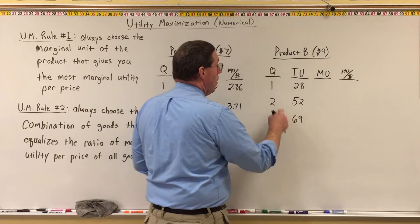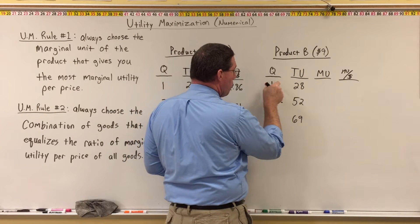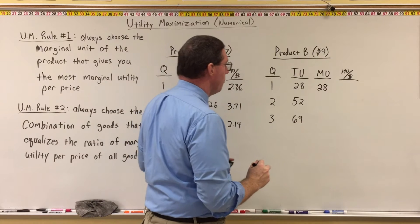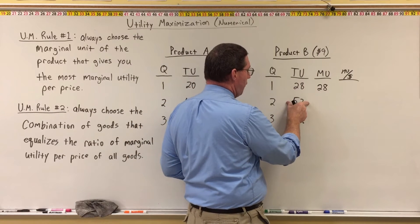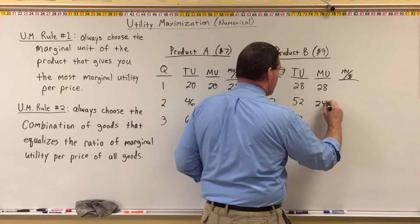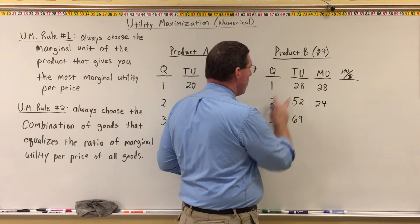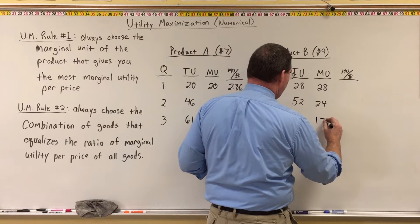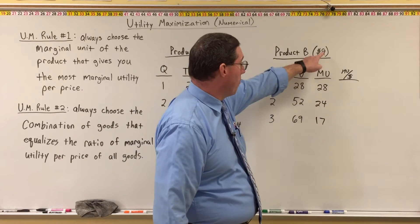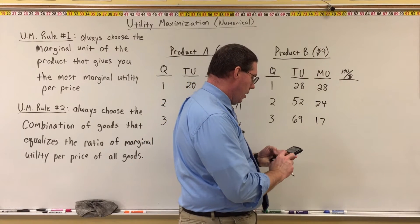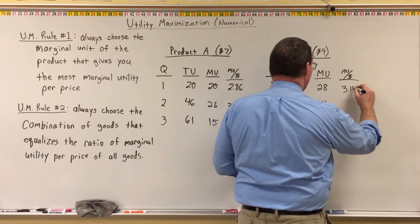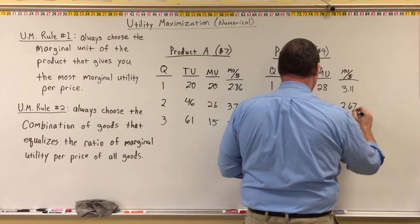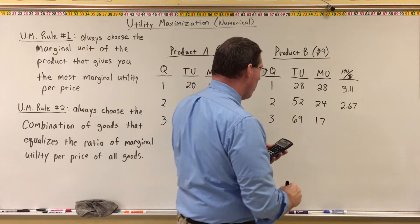For product B, the marginal utility of the first unit is 28, since consuming one unit brings total utility up to 28. The second unit brings total utility from 28 up to 52, so marginal utility is 24 (52 minus 28). The third unit brings total utility from 52 up to 69, so marginal utility is 17. Dividing by the price of $9: 28 ÷ 9 = 3.11, 24 ÷ 9 = 2.67, and 17 ÷ 9 = 1.89.